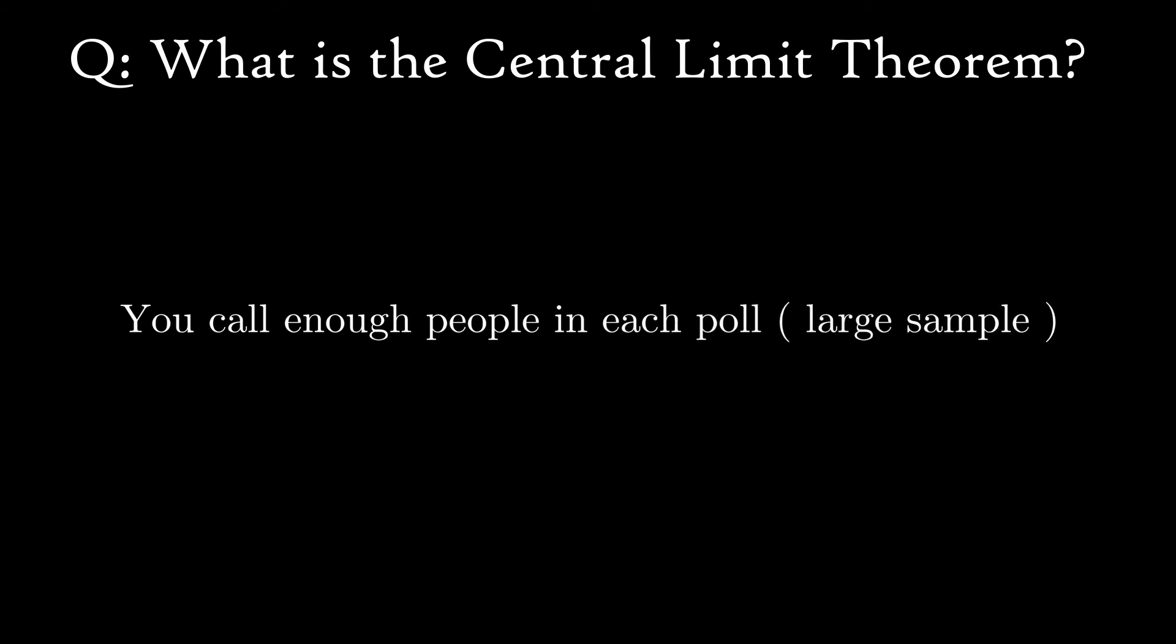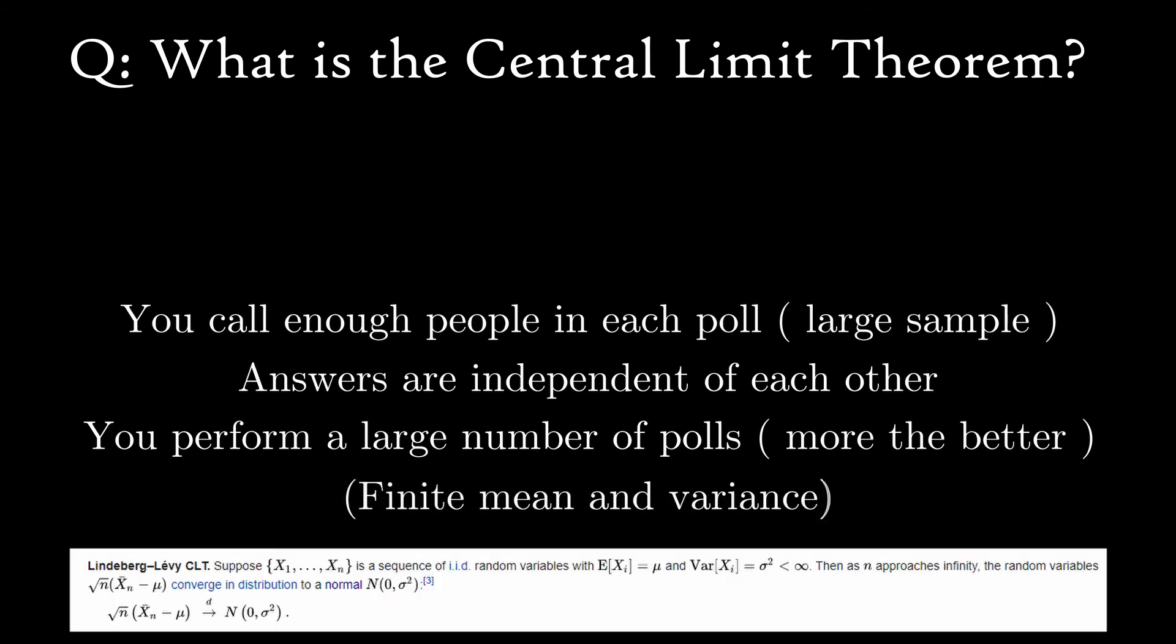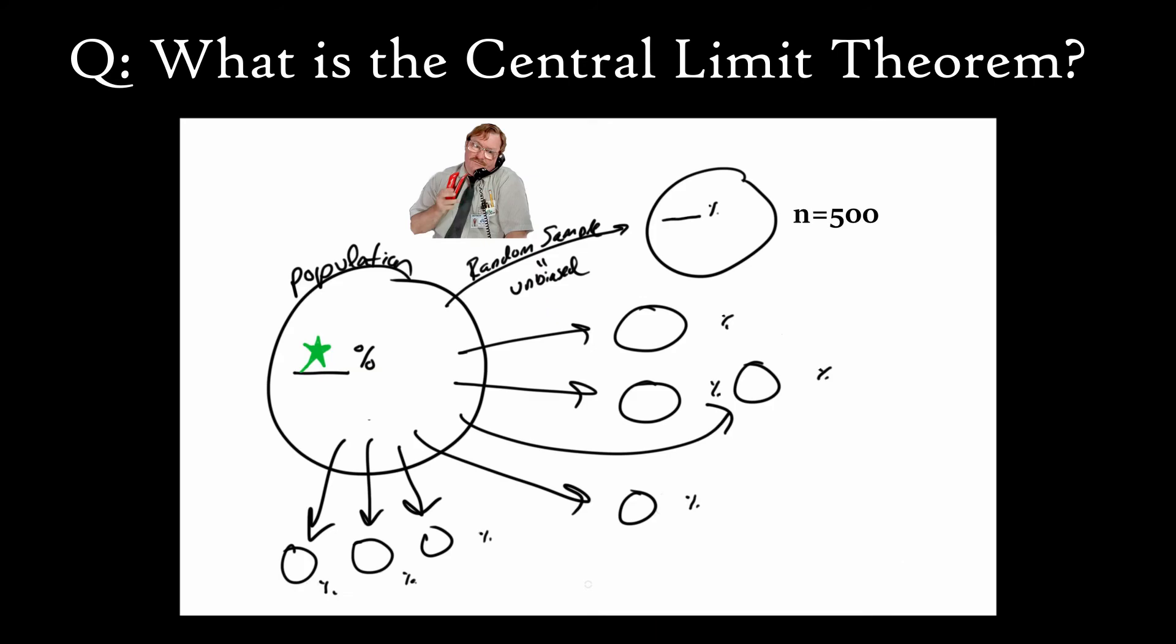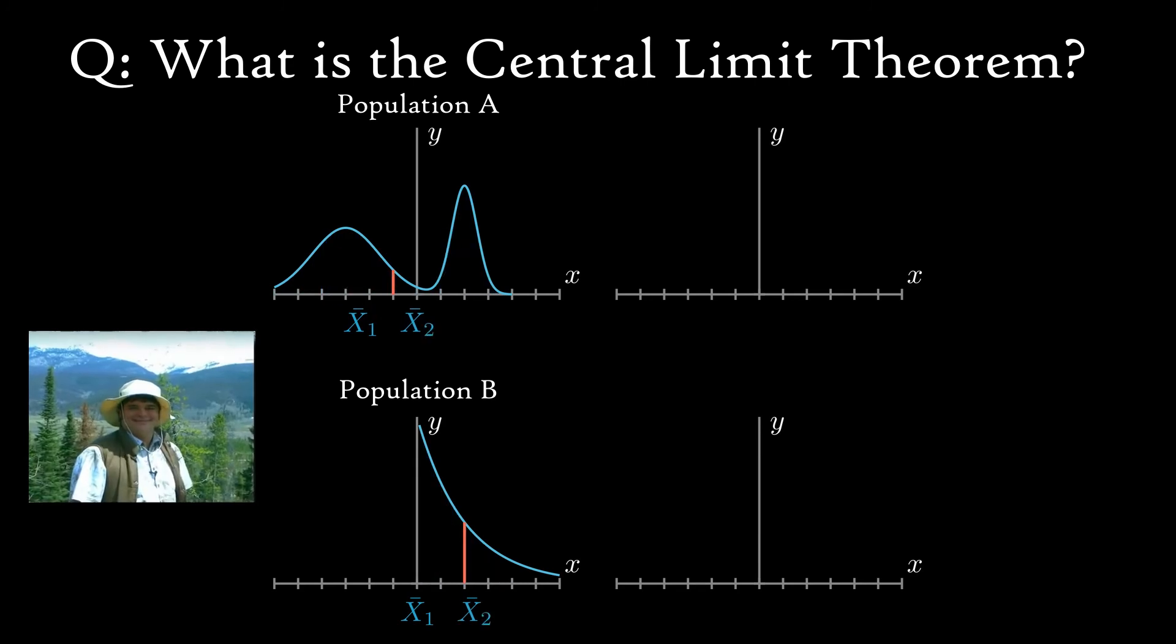So long as you're calling a large number of people, the answers people give are independent of one another, and you perform a large number of polls, the central limit theorem tells you how the results of your polls will be distributed. It says the results of the battery of 500 person polls will form a bell curve centered around the percentage of people who like chocolate you wanted to know. How neat is that?